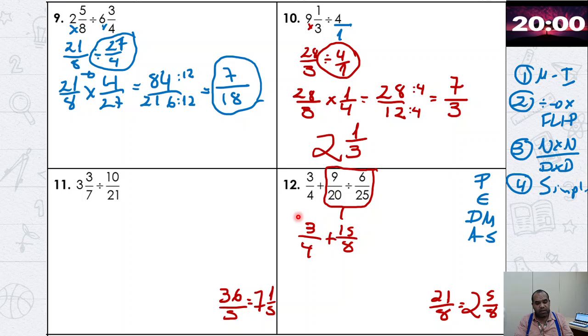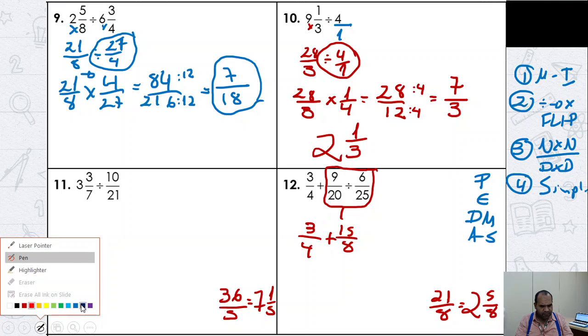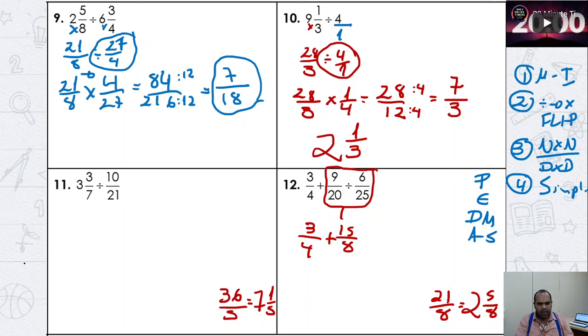But we can solve some harder ones like number eleven. Let me solve number eleven so you understand. First of all, remember these steps. We started writing the mixed number as an improper fraction. Three times seven plus three. Three times seven is twenty-one. Twenty-one plus three is twenty-four. Twenty-four over seven divided by ten divided by twenty-one. Right now, I will switch the division to multiplication and flip the fraction.